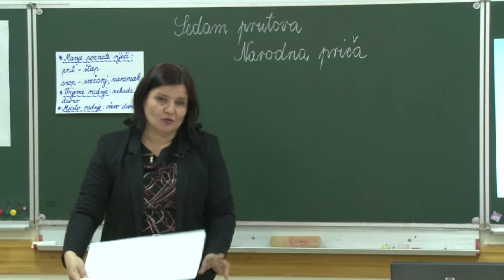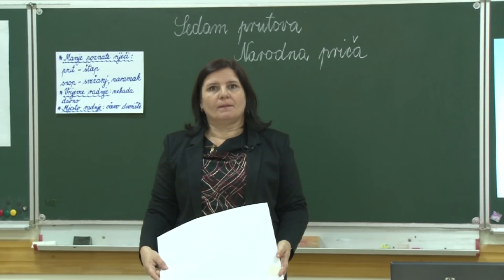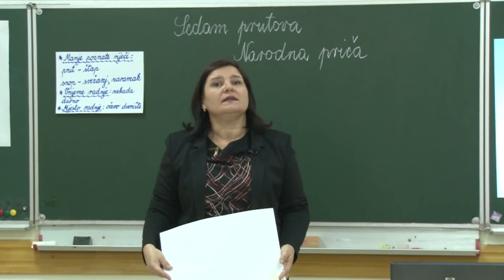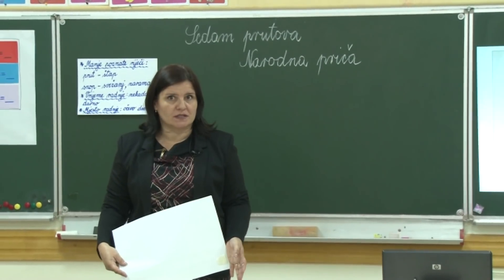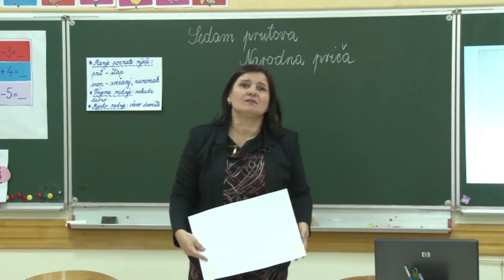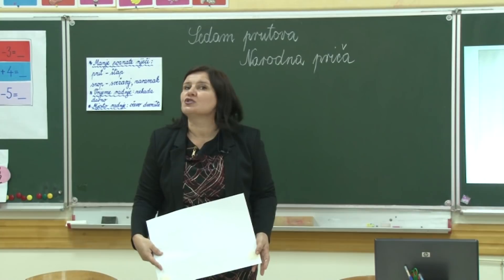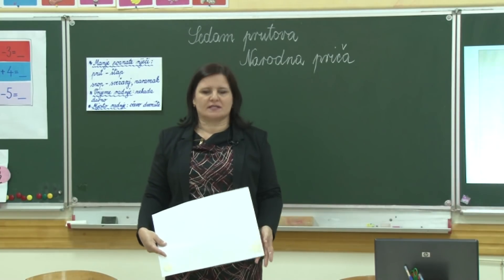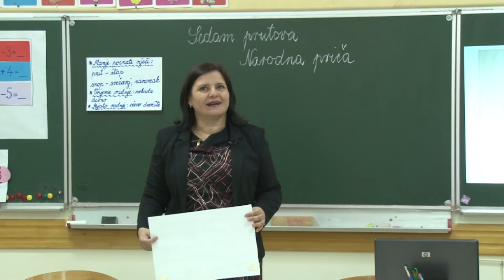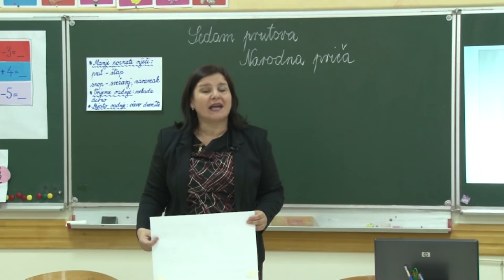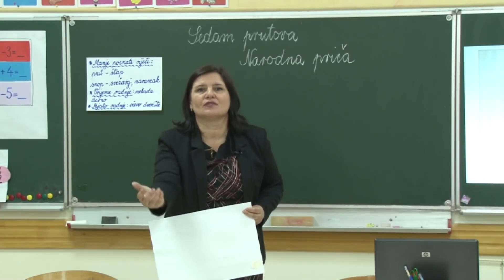Ko su likovi u našoj priči? Otac i sinovi. Koliko je otac imao sinova? Sedam. Kad bih vas pitala da mi kažete njihove osobine — kakav je bio otac? Brižan, pažljiv, vodi brigu o svojima, dobronamjeran. A kakvi su sinovi bili? Da li su bili zahvalni na tome što su ih roditelji lijepo odgajali? Nisu. Kad su se poženili, počeli su se svađati. Pa možemo reći da su sinovi svađalice i malo nezahvalni.